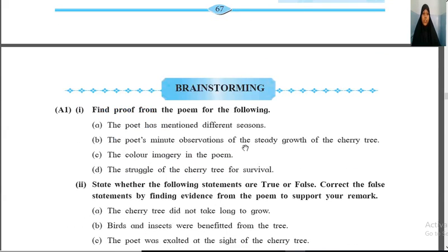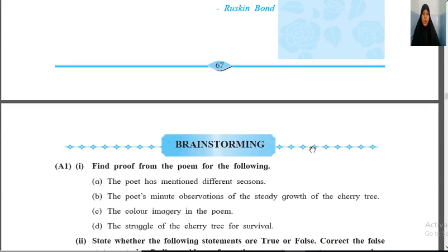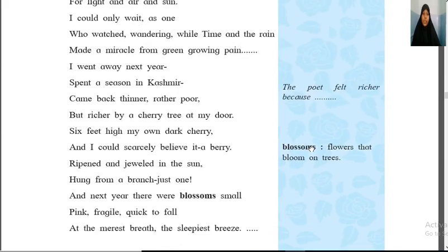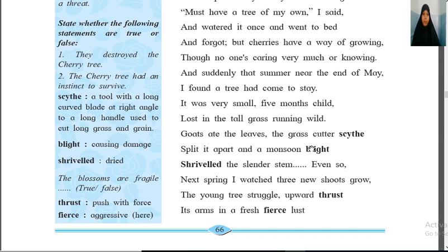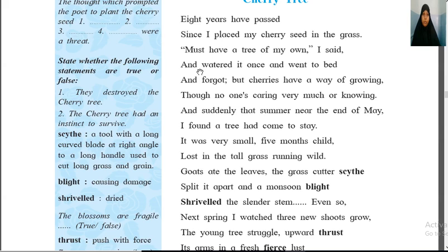The next question is about the poet's minute observation of the steady growth of the cherry tree. Which lines show that the poet was very minutely observing the growth of the cherry tree? You can say 'and suddenly that summer, near the end of May, I found a cherry tree that had come to stay.' It was very small — a five months old child. See how he is observing. He realizes that the five months old, small cherry tree has grown in his garden.